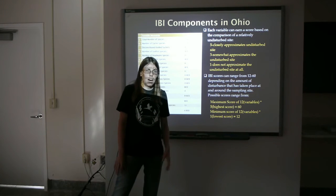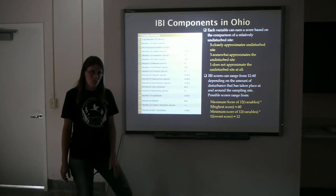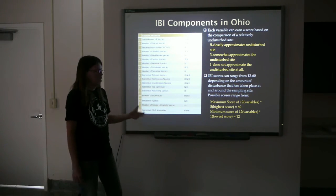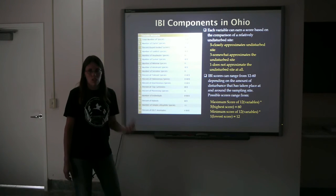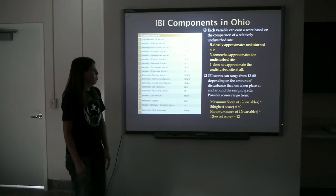Warm water habitat is typically around a 40, so if your site is scoring a 40, that's a really good assemblage of fish and macroinvertebrates.